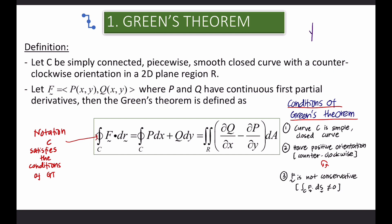Let's consider the line integral. To apply this theorem, the line integral must have positive orientation — counterclockwise — for C2, C3, and C4. Let the vector F have components P and Q, where P and Q have continuous first partial derivatives. Then Green's Theorem is defined by the following formula: the line integral equals the double integral.